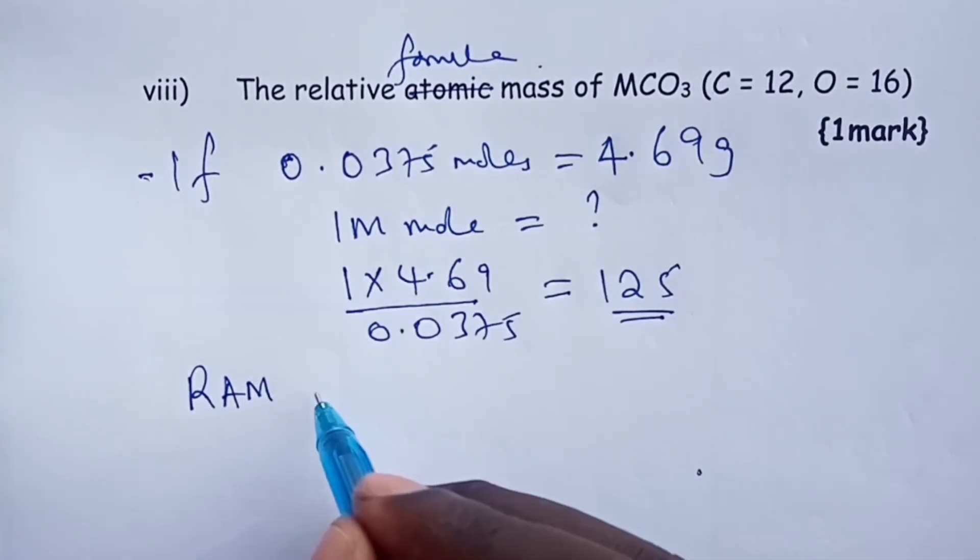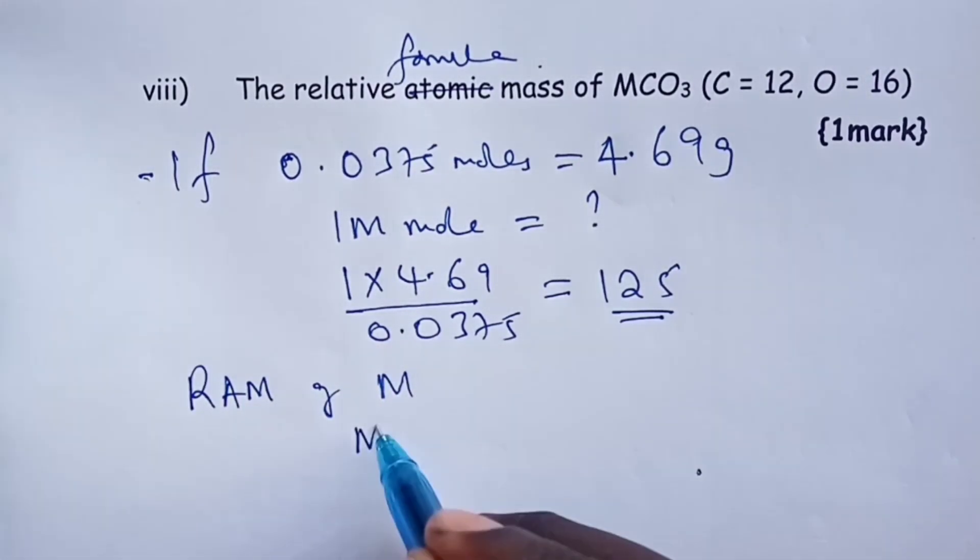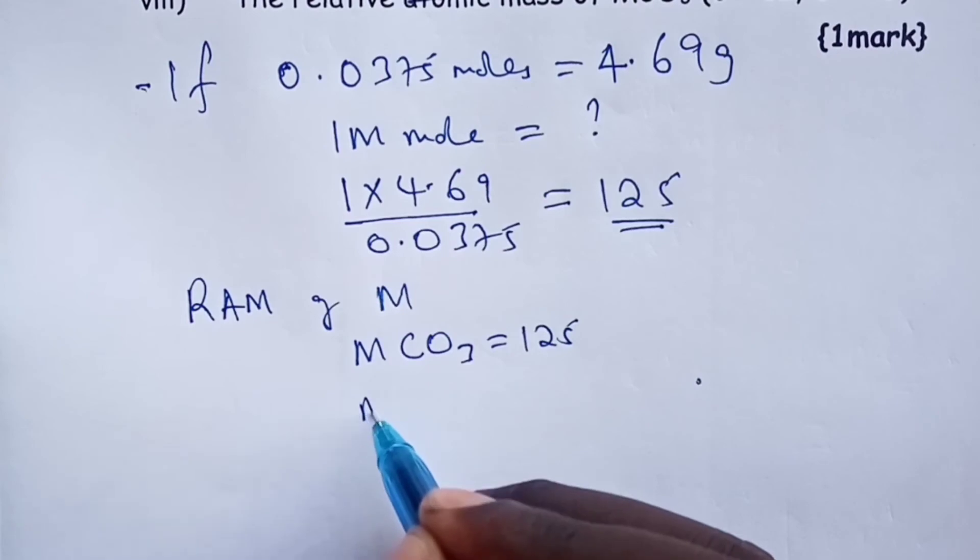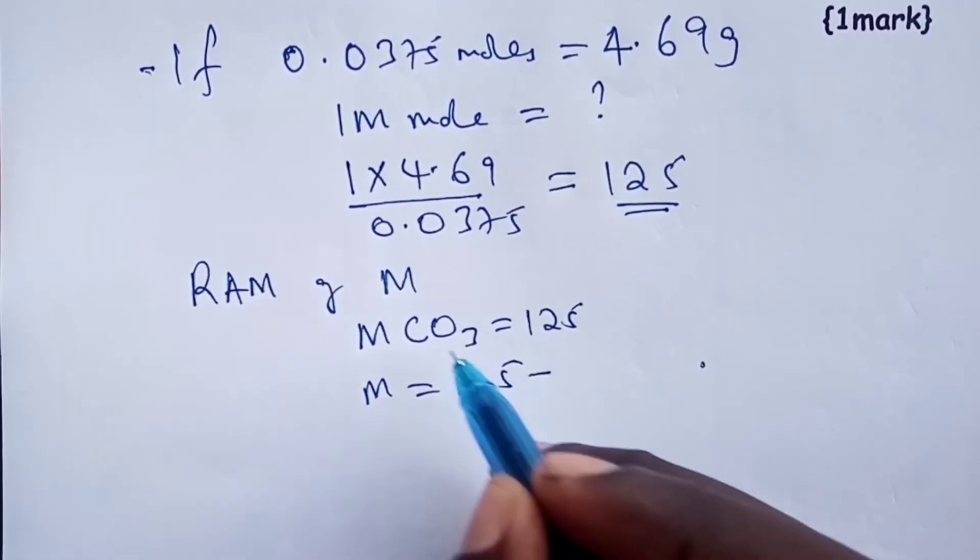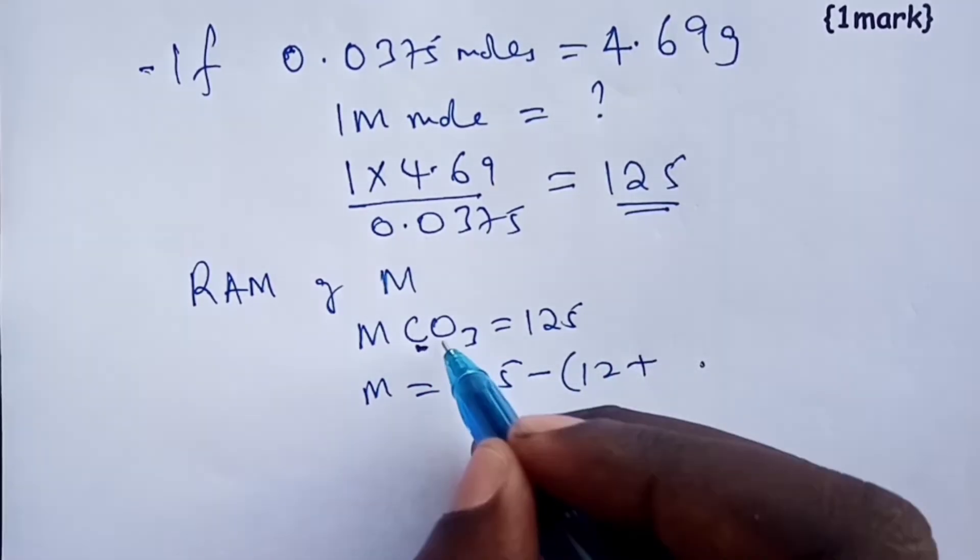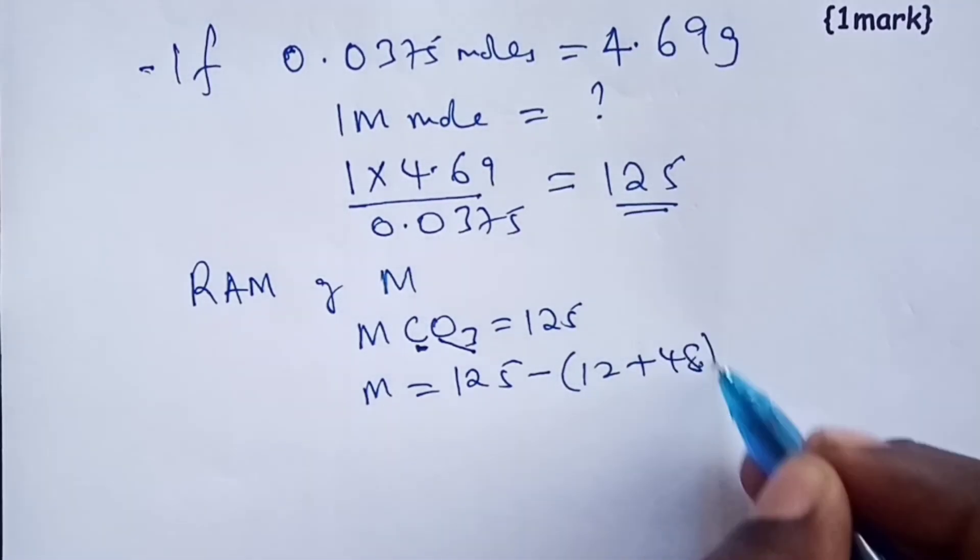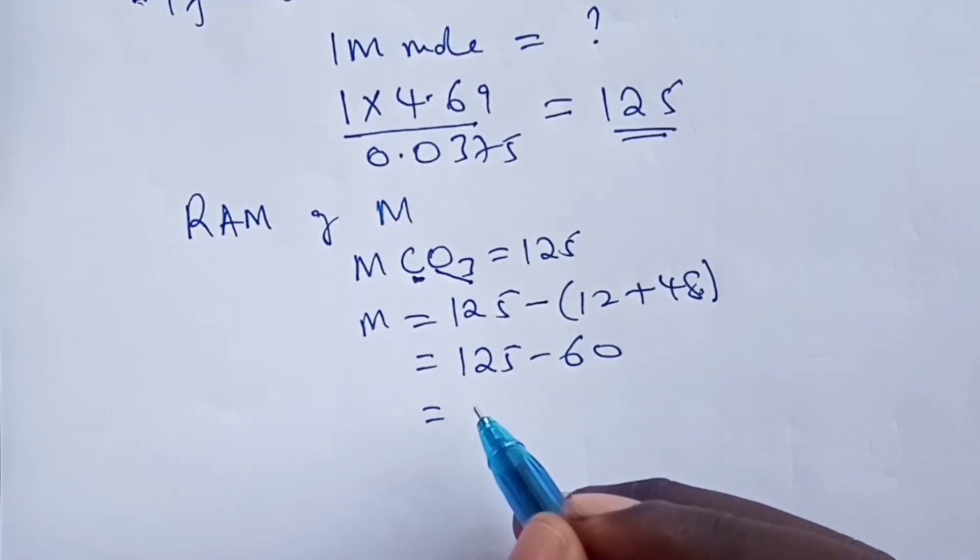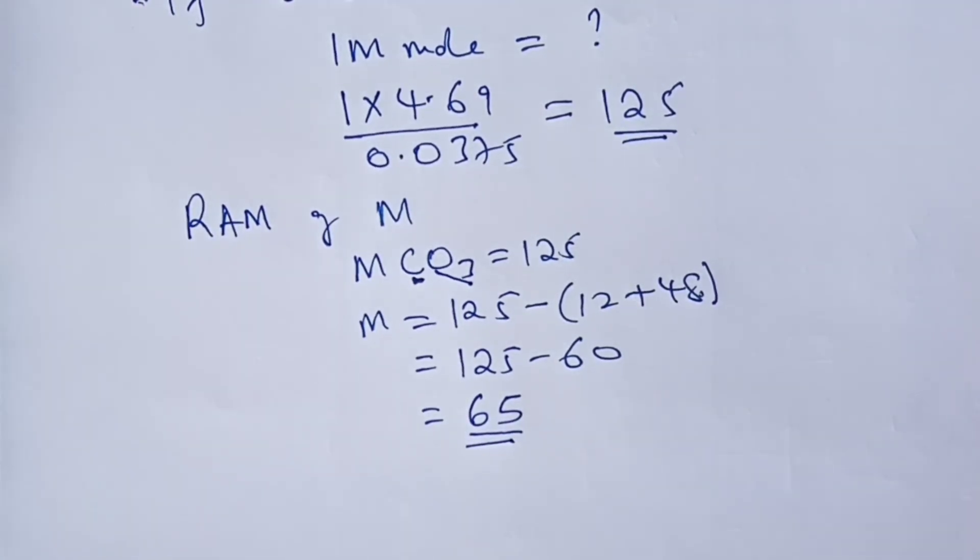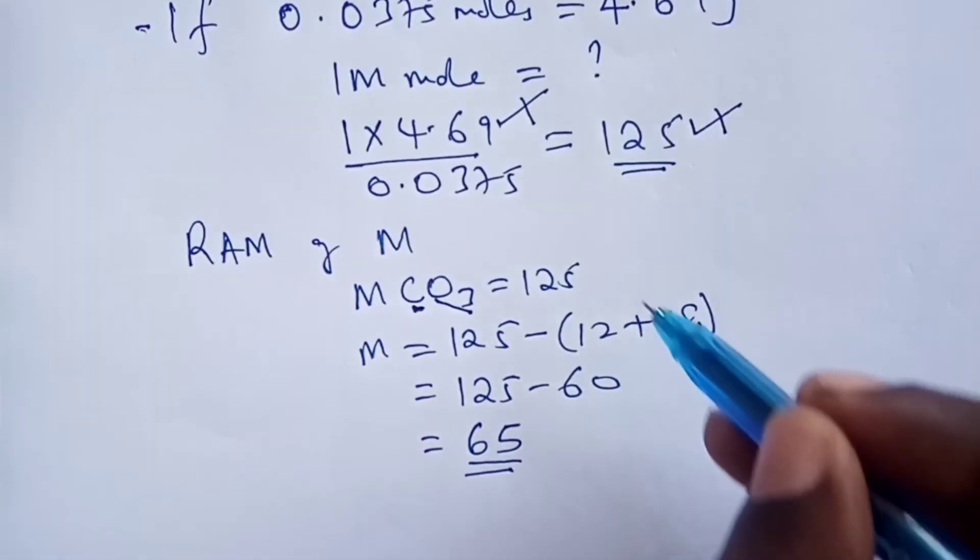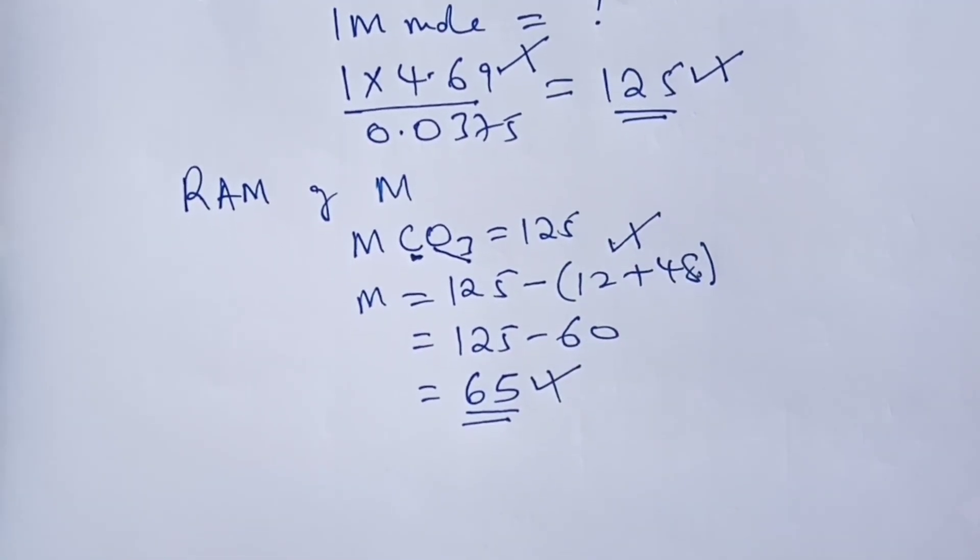Finally, to get relative atomic mass of M, we shall equate MCO3 to 125. So, M will now be 125. From it, I'll subtract 12 for carbon and 3 oxygens will be 48. So, this is 125 minus 60 and the answer, the relative atomic mass of M becomes 65. For the half marks, we shall give a half for the working there, a half for the answer, a half for the relation, and finally, a half for the RAM of M.